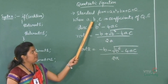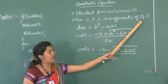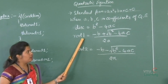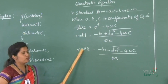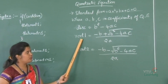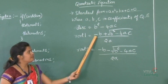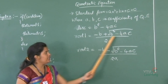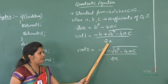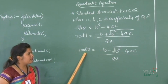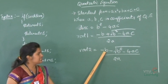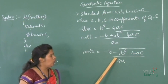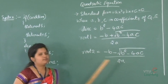Where A, B and C are the coefficients of a quadratic equation. Here we have to compute the value for root 1 and root 2. Root 1 value will be computed by using the formula minus B plus square root of B squared minus 4AC, whole divided by 2A. Root 2 value will be computed by using the formula minus B minus square root of B squared minus 4AC, whole divided by 2A.